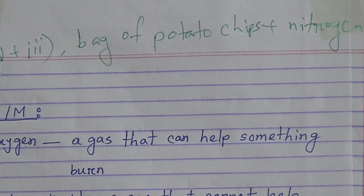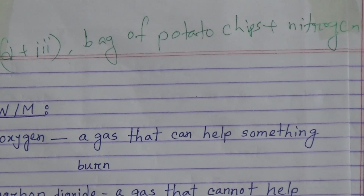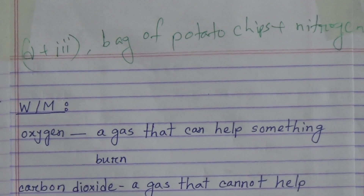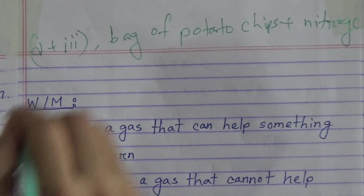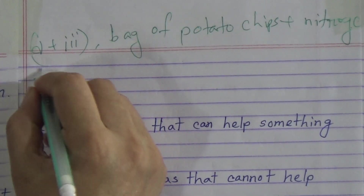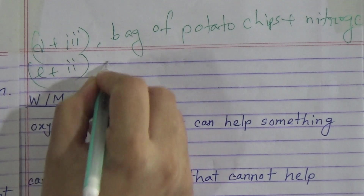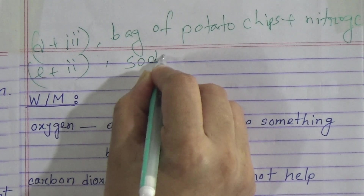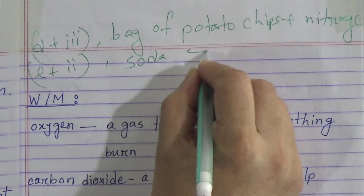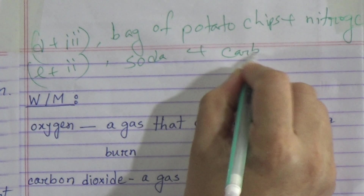Option E — soda, that means soft drinks — will be matched with option 2, carbon dioxide. Write E plus 2: soda plus carbon dioxide.